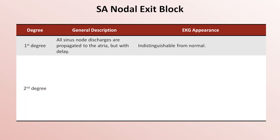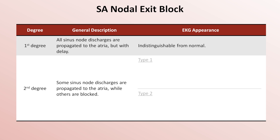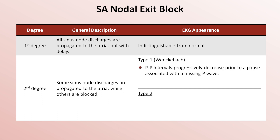In second degree SA exit block, some sinus node discharges are propagated while others are blocked. As with second degree AV block, there are two main types. Type 1, rarely referred to as Wenckebach SA block: the p-p intervals progressively decrease prior to a pause in the rhythm associated with a missing p-wave. The typical pause duration is less than the sum of the two prior p-p intervals. It sometimes confuses people that with AV block the PR interval progressively prolongs, yet in SA block the p-p interval progressively decreases — but that's just what's seen, analogous to the R-R interval decrease in classic type 1 second degree AV block.